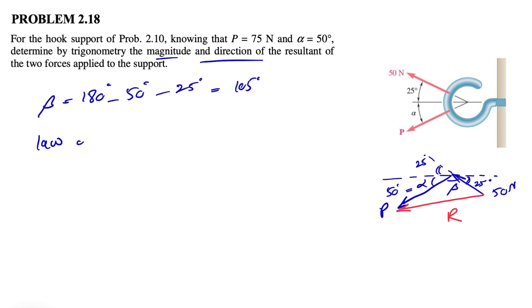Now we can use the law of cosines in order to find R. If we want to find R, we have R squared equals P squared, which is 75, plus the other force, 50 Newton squared, minus 2 times 50 times 75 times the angle in front of that side, which would be the angle beta. So we'll have cosine of beta, which we found is 105 degrees.